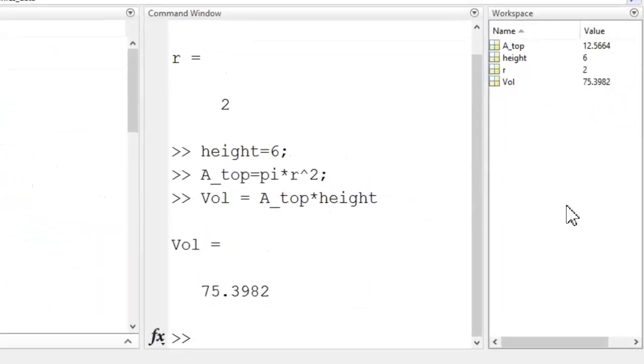You should see that four variables were stored in the workspace. One for each command with an equal sign in it.